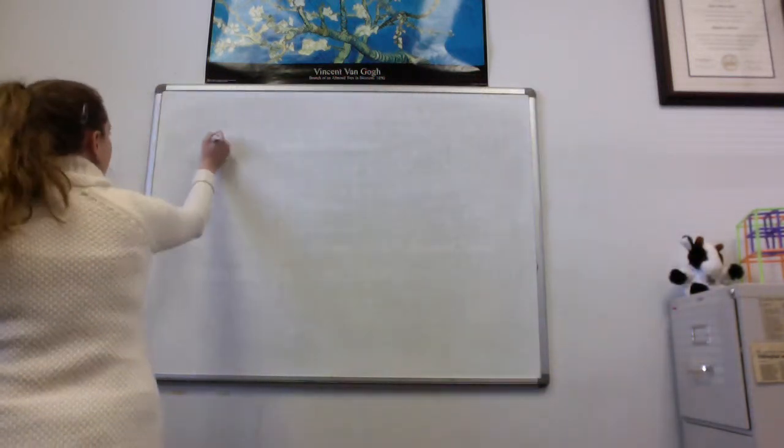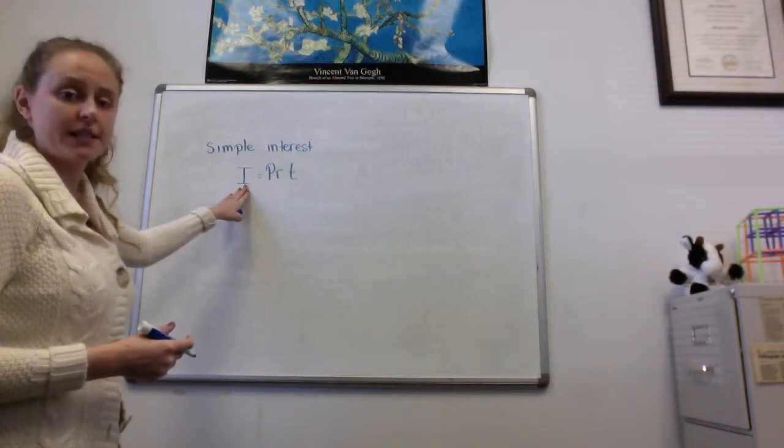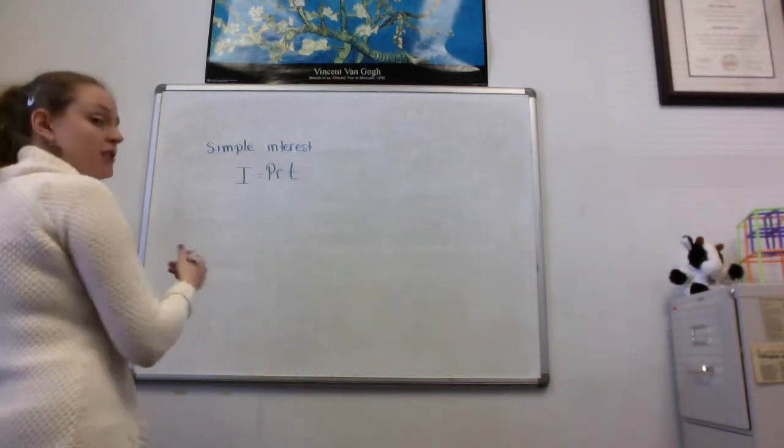The first formula is simple interest. And the formula that we're going to be using is I equals PRT. Now, each one of these letters stands for something. And these things are going to be given to us in the problem. So I stands for interest, the simple interest that we're looking for. So that's our answer. We're going to use this formula any time we're asked to find the simple interest.